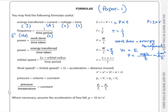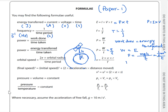Orbital speed equals twice pi times orbital radius divided by time period. V equals 2πr, where r is the orbital radius and t is the time. The orbital radius r equals capital R, the radius of the planet, plus height h from the surface of the planet to the orbit of the satellite.